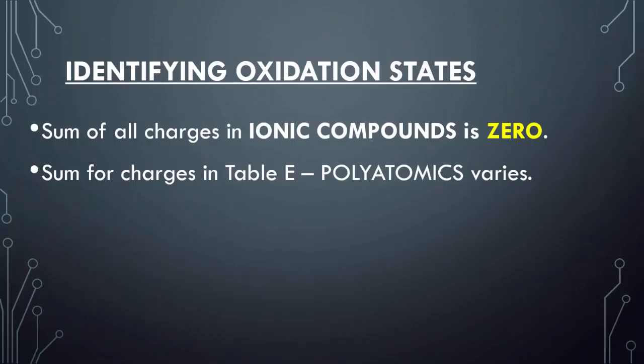When identifying oxidation states, you have to understand that the sum of all the charges together is going to equal zero. The sum of the charges on table E — that group of polyatomic ions — is going to have the charge of that entire group. For example, NO3 has an overall charge of negative one, which means the sum of the nitrogen and the sum of the three oxygen atoms all together equal negative one.